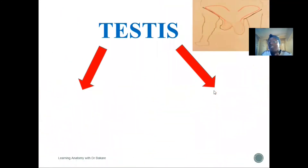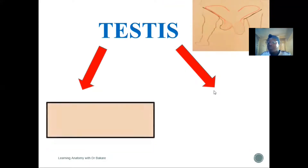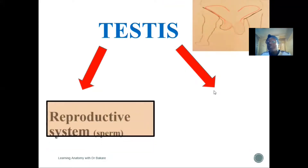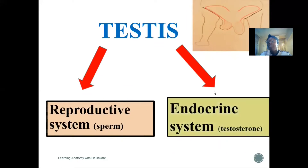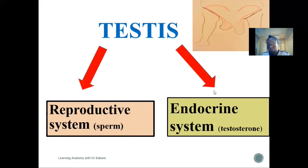The testes has a function under the reproductive system and another under the endocrine system. For the reproductive system, it helps in the production of sperm, while under the endocrine system it produces testosterone. As we go through this lecture we'll see how the testes is able to do this.